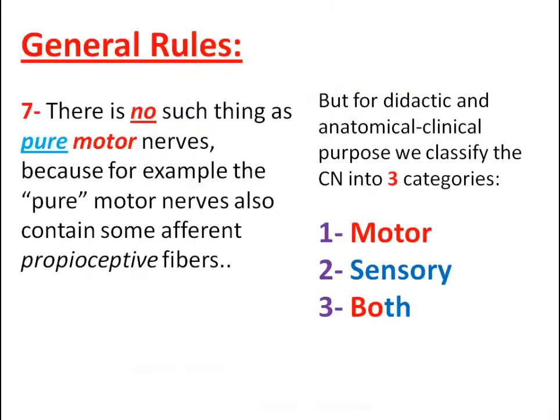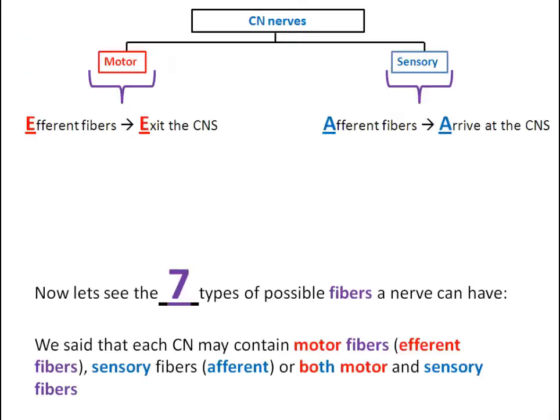Seven: there is no such thing as pure motor nerves, because the so-called pure motor nerves also contain some afferent and proprioceptive fibers. But for didactic and anatomical clinical purposes, we classify the cranial nerves into three categories: motor, sensory, and both — containing motor and sensory fibers. Now let's see the seven types of possible fibers a nerve can have.